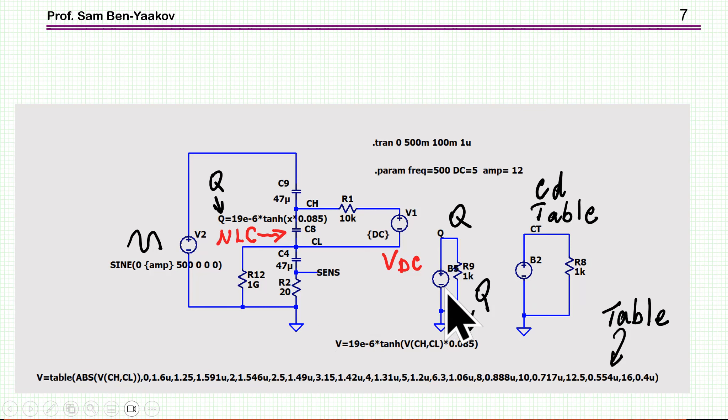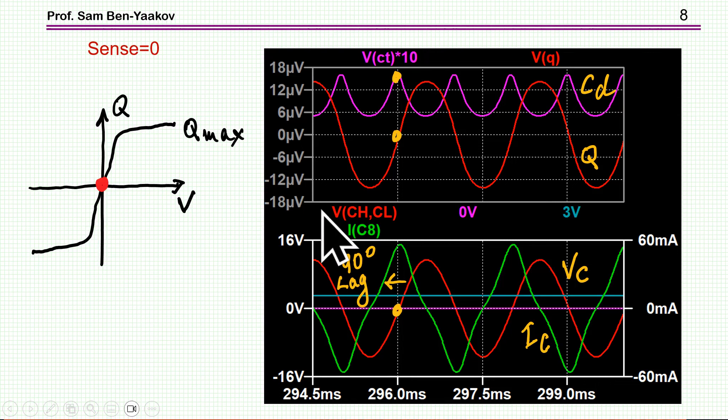Here, I've also put some auxiliary circuits. One is reconstructing the Q, the charge, and this is by using the same equation. This is the voltage. Here is the charge as a function of the voltage across the capacitor. And also, I'm reconstructing the small signal capacitance, or the derivative capacitance, through the table. This is the table, which is actually digitizing the datasheet information, the curve that I've shown earlier.